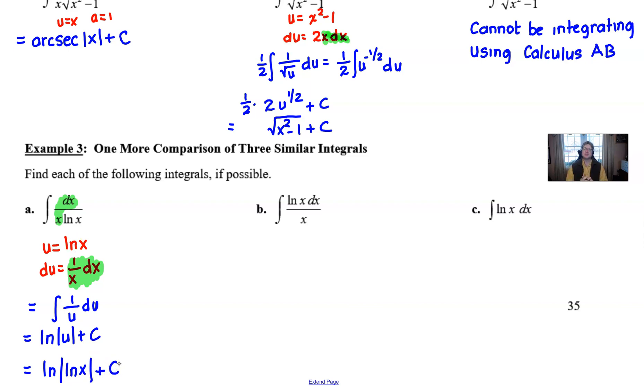So you got the natural log of the absolute value of the natural log. And you want to make sure that you keep the absolute values around this because ln of x can take on negative values. The graph of ln of x, if you recall a little bit from your algebra days, looks a little something like this. So this part of the graph could be negative and we want to safeguard against that.